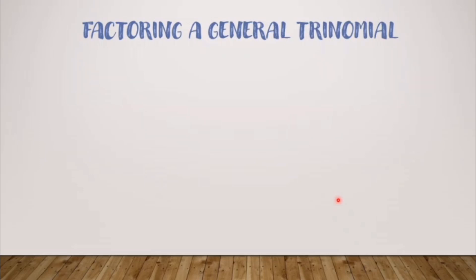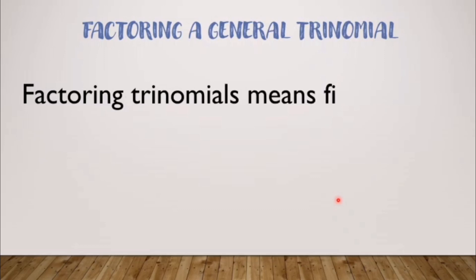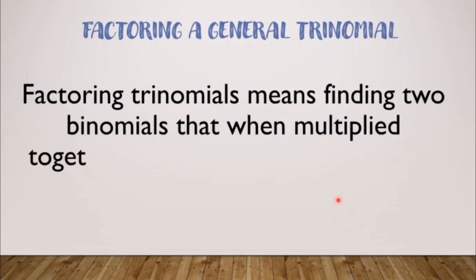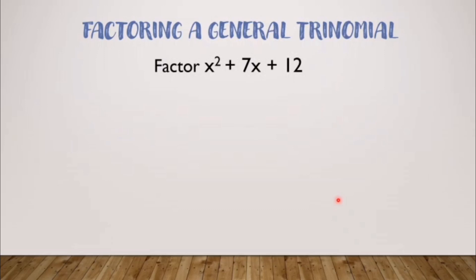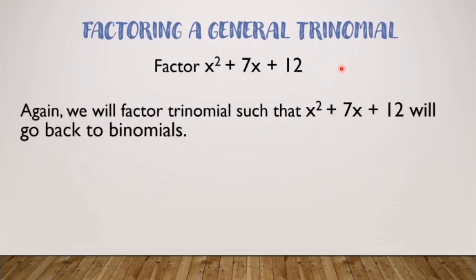Factoring a general trinomial. Factoring trinomial means finding two binomials that when multiplied together, produce the given trinomial. So as I told you, it's the reverse of what we did earlier with the FOIL method. We're now looking for two binomials that when multiplied, will arrive with a general trinomial. It's similar to perfect square trinomial, except the last term is not a perfect square. For those who haven't watched our factoring perfect square trinomial, I will put the link in the description box so you can watch it, or you can visit our YouTube channel. In this case, as you notice, 12 is not a perfect square. So that means we can call this a general trinomial.